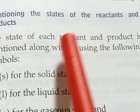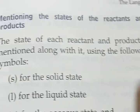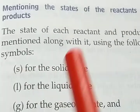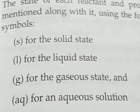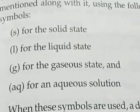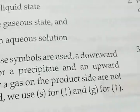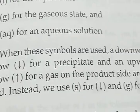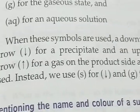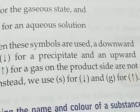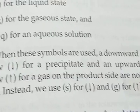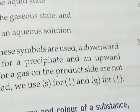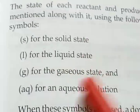Normally, in chemical reactions when reactants are reacting and products are forming, we express their state as a symbol. When these symbols are used, a downward arrow for a precipitate and an upward arrow for a gas on the product side are not used. Instead, we use S for solid state and the downward arrow for precipitate, and G for gas. So these are the common symbols which are used in chemical equations.